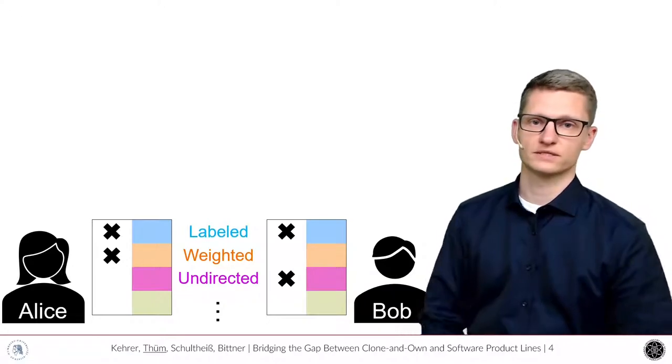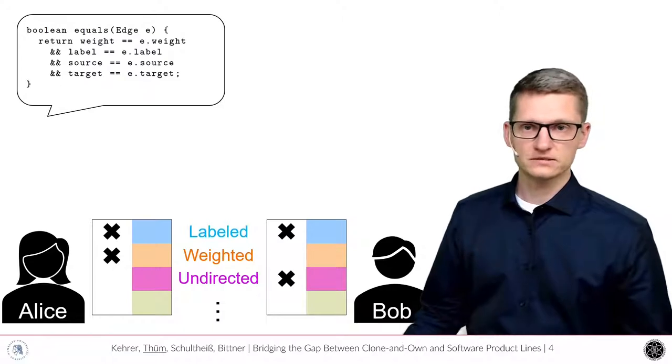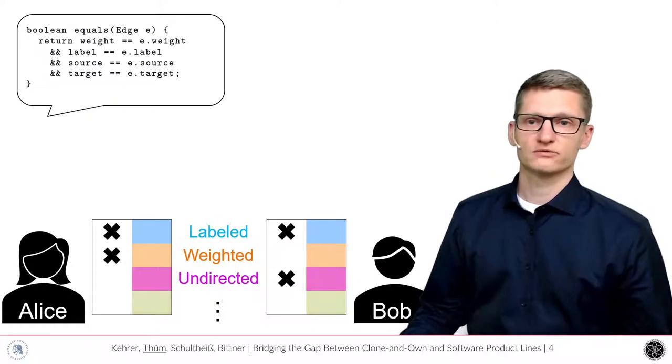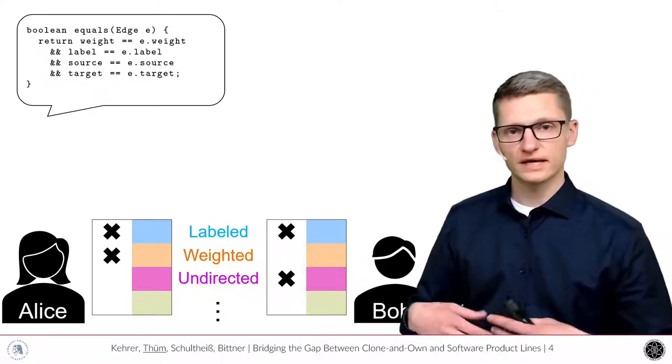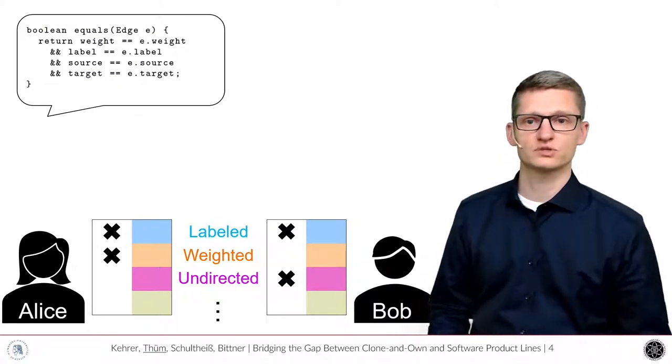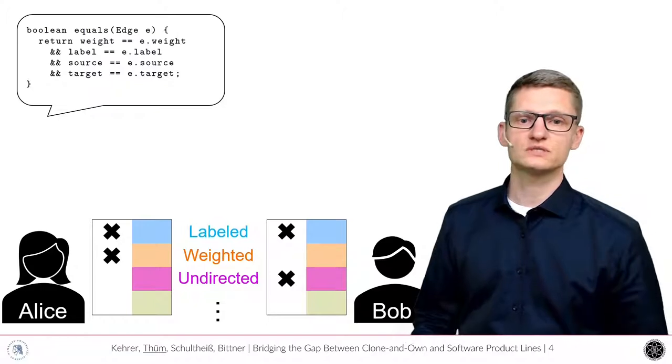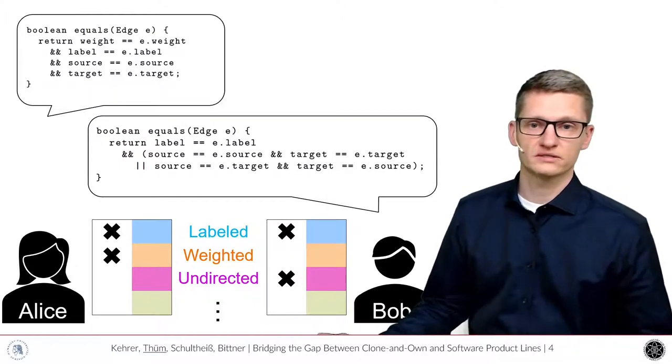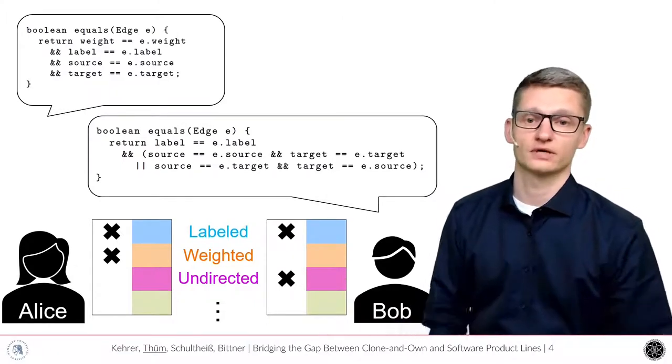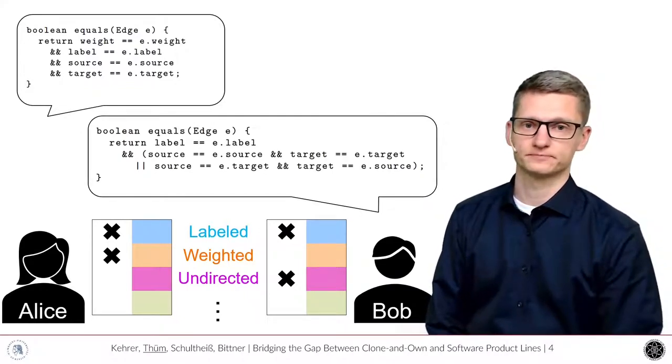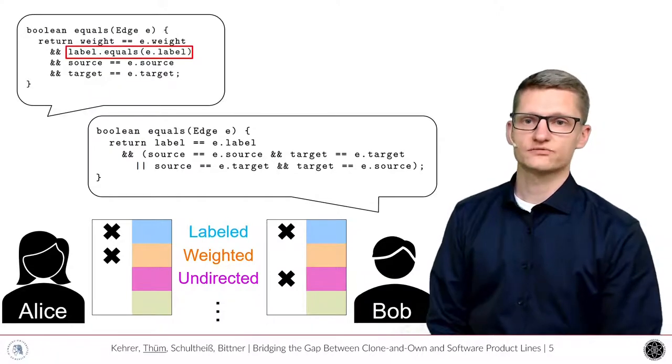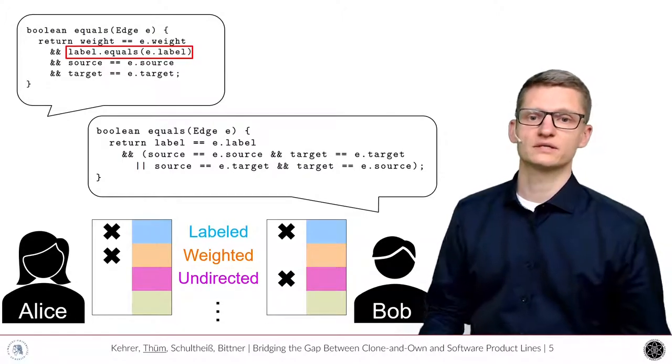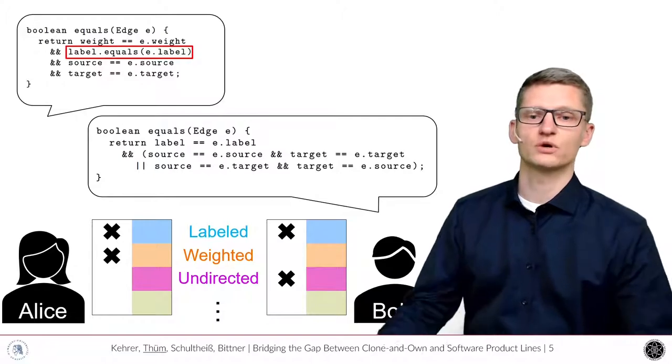Let's look in the code to understand the problem of merging the fixes. In Alice's case, we look at the equals method for the edge class. We have to consider the following features: comparing edges means that edges should have the same weight, same label, same source and same target. But of course, this very same method must look different in Bob's case. There are no weights, so there's no comparison on the weights. And the comparison of undirected edges is slightly more complicated. So how to get this fix that Alice did in the code and make it applicable to Bob's variant? And how to automatically find that?